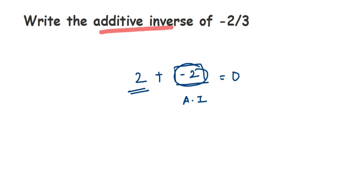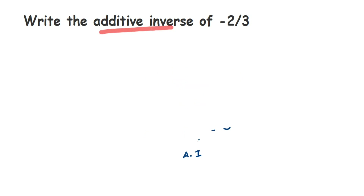Vice versa: if I have the number minus 2, then the additive inverse of minus 2 will be 2. Take the same number with the opposite sign — negative becomes positive, so plus 2. So 2 is the additive inverse of minus 2. Whenever you have to find the additive inverse, take the same number and just change the sign.